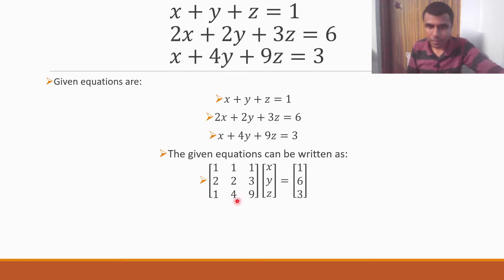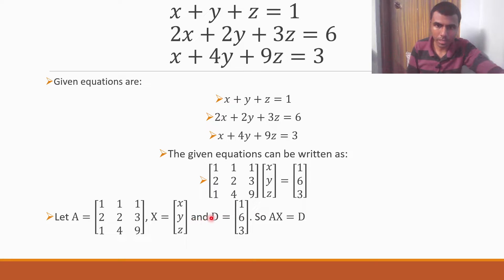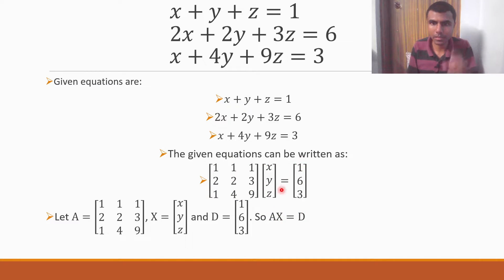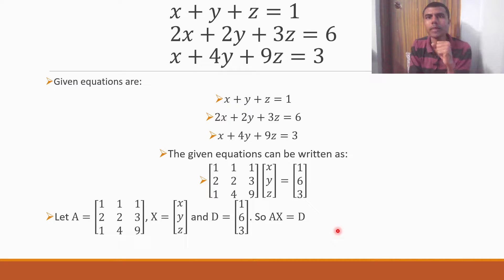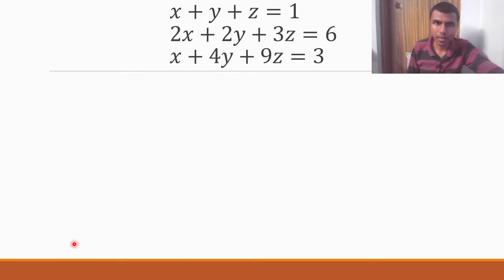Now take the first matrix as A, the second matrix as capital X, and the matrix on the RHS as capital D. So this matrix equation can be written as AX = D. Now before applying the matrix inversion method, we first have to check whether the determinant of A is equal to 0 or not. If the determinant is equal to 0, then we cannot use the matrix inversion method.